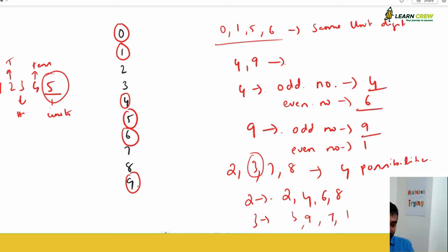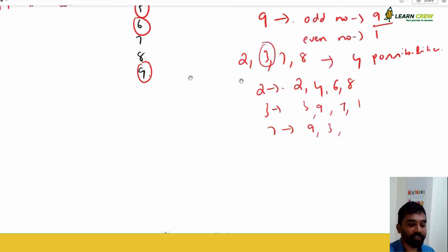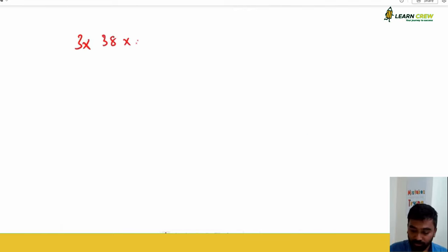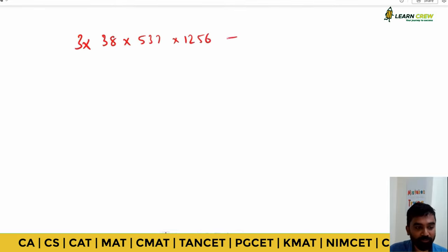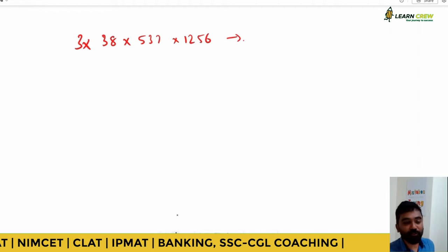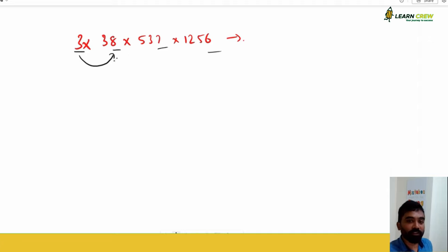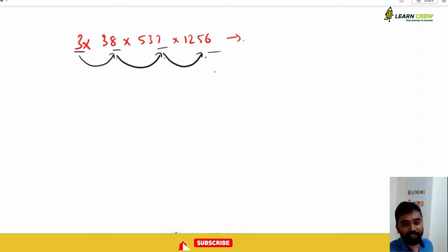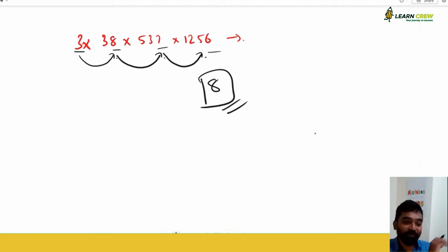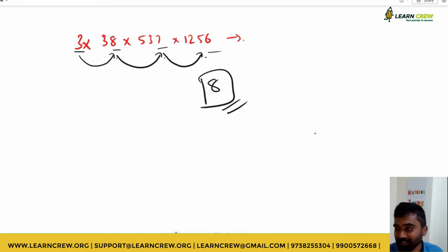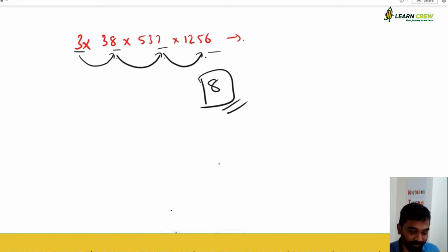These are some of the basics for finding the unit place value. Now let us start with example problems. For example: 3 × 38 × 537 × 1256 — what is the unit place value? Whenever they ask for the unit place value, just look at the units digits. Three into eight is 24, ending with four. Four into seven is 28, ending with eight. Eight into six is 48. Do not sit and multiply the entire numbers — just the units place.